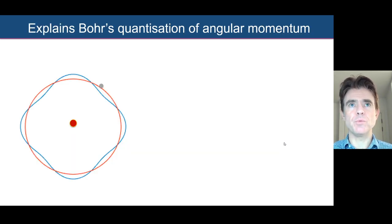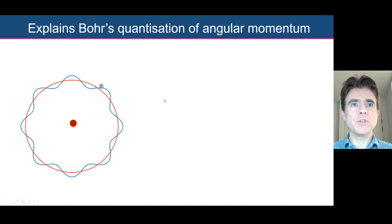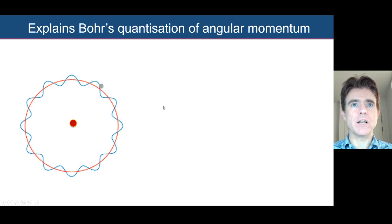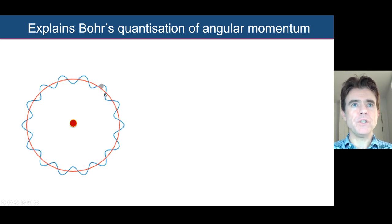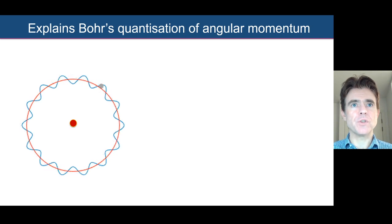Let's see how that helps us with Bohr's model of the atom. Remember the quantization of angular momentum that Niels Bohr had used. We're imagining the proton of a hydrogen atom with an orbiting electron at different energies. There are discrete radii in the Bohr model, and we can represent the electron as a wave function in a particular orbit, shown at different frequencies around the nucleus.